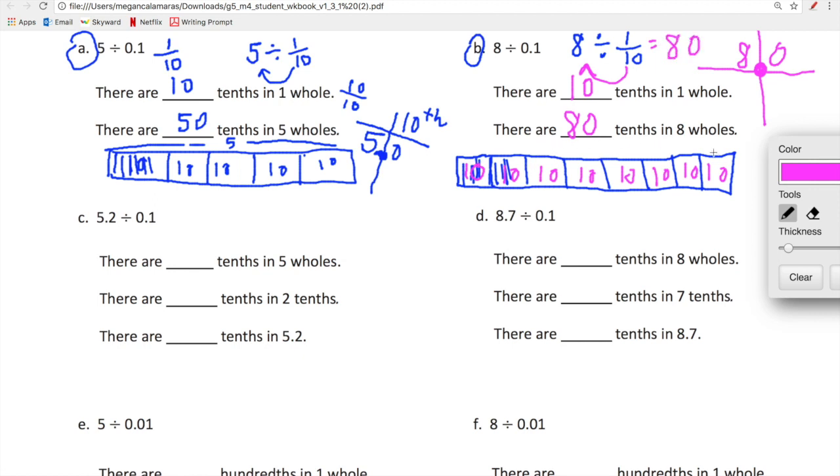So eight divided by one tenth, eighty. Let's go back to the model. Let's see if this model supports what we've just found. This model represents eight wholes. I divided each of my units, each of my single units into tenths. That means I have how many sets of ten? One, two, three, four, five, six, seven, eight. That means that I sliced each of our individual units into tenths, which means I have 80 units. So eight divided by one tenth is 80. I'm into it.